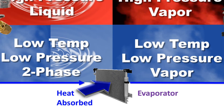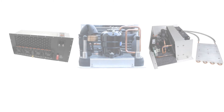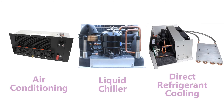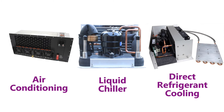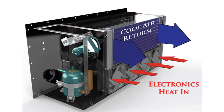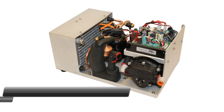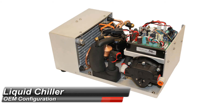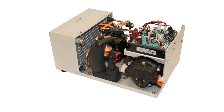By varying the evaporator, the vapor compression cycle can be used to cool air, liquid, or cold plates. To create an air cooling system, the evaporator is a refrigerant to air heat exchanger. To cool liquids, the evaporator is a refrigerant to liquid heat exchanger, with the pumped liquid being cooled by the evaporating refrigerant.